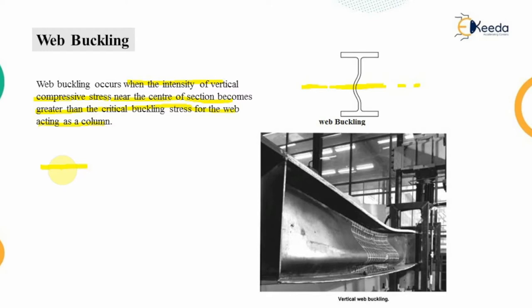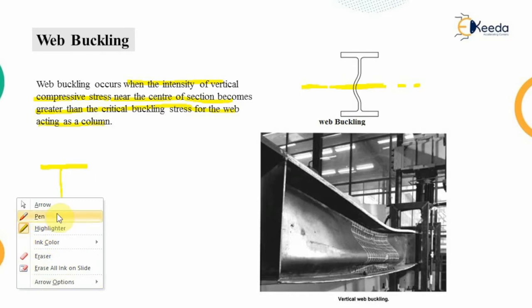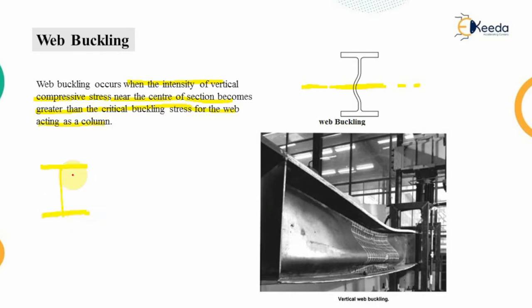In an I-section used as a beam, the top and bottom portions are known as the flanges, while the middle portion is known as the web of the beam section.